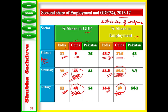When we come to Pakistan, 42 percent of people are working and contributing 25 percent in GDP from the agriculture sector. Only 3.7 percent of people are working in the secondary sector, contributing 21 percent to GDP. And 54.3 percent of people are working in the tertiary sector, contributing 54 percent in GDP.